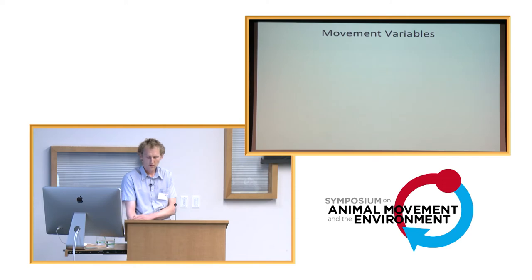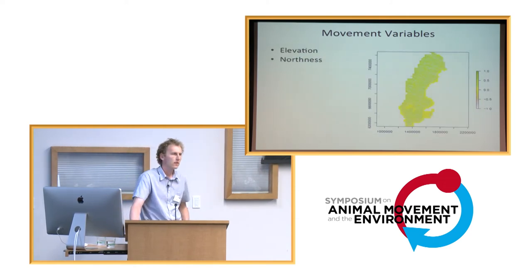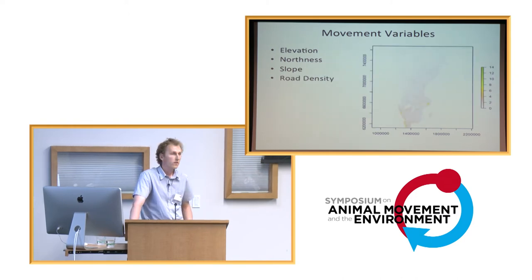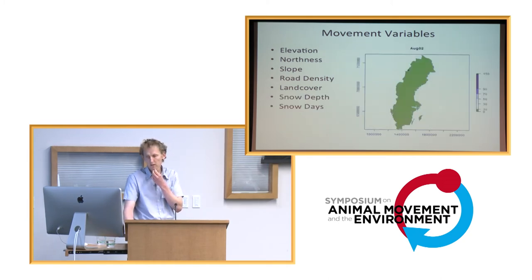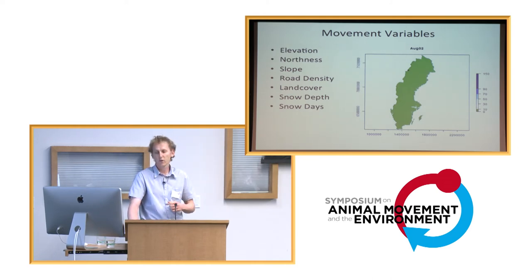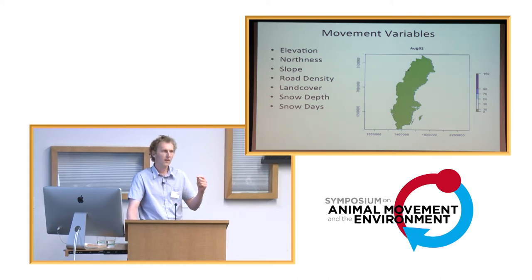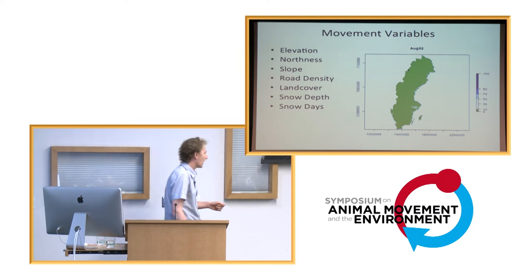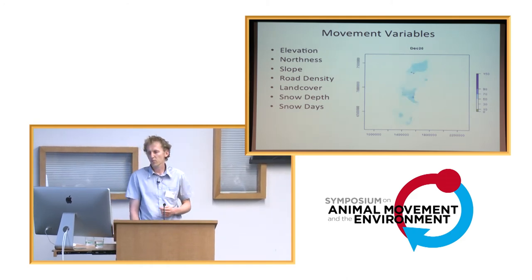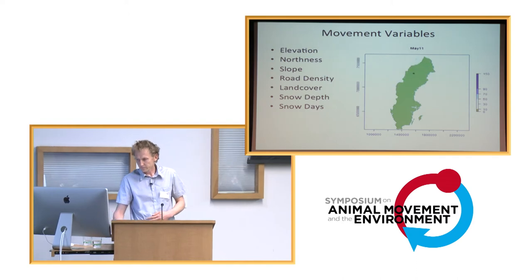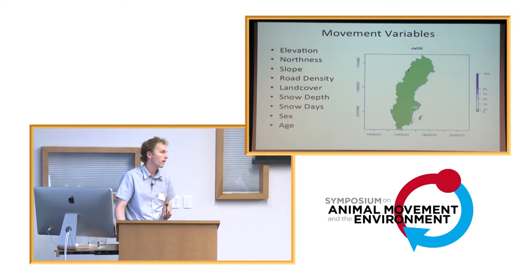In terms of the movement variables we used: elevation, northness — especially in northern latitudes, where south-facing slopes can be more productive — the steepness of the slope, and road density, which is a weighted road density where fenced highways carry a much higher weighting than forest roads. We also used land cover data for landscape structure, and weather station data for daily snow depth across the 10 years of the study, creating a raster for every day of the year so we could get the snow depth where each individual was in space and time. I'll just run you through a year of snow in Sweden and the migratory movement of a moose. And the last data we used was life history variables of age and sex.